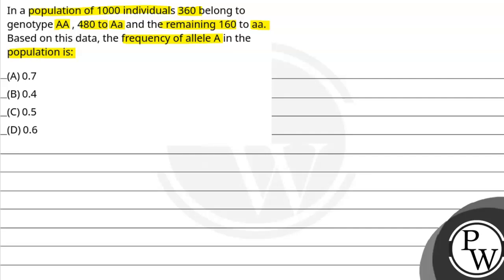So here we have population of 1000 individuals, in which 360 belong to genotype AA, 480 to capital A small a, that is heterozygous form, and remaining 160 to aa, that is homozygous genotype. The question is, frequency of allele capital A in the population kya rahega?